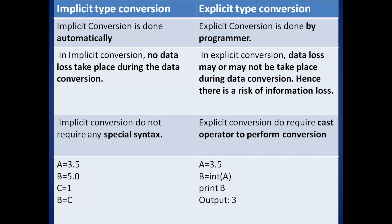In implicit type conversion, no data loss takes place during the data conversion. But in explicit type conversion, data loss may or may not take place during data conversion — hence there is a risk of information loss.